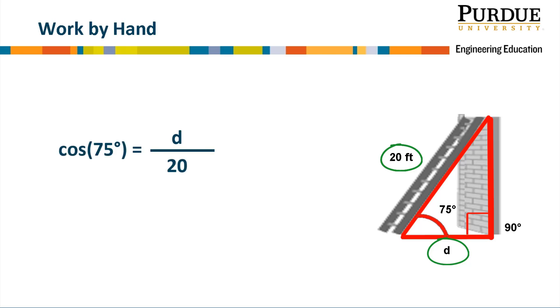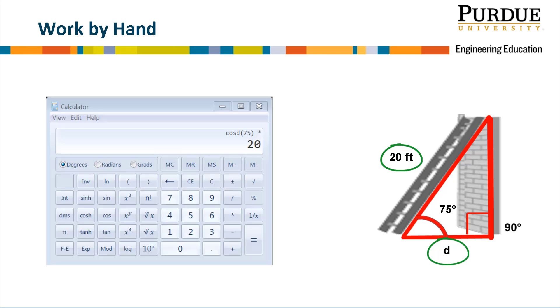We know the cosine of the angle 75 degrees is adjacent over hypotenuse. This gives us d as being equal to the cosine of 75 degrees multiplied by the length of the hypotenuse. The answer we obtain is 5.18 feet. We can now try our calculation in MATLAB.